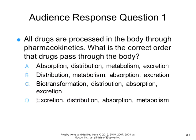All drugs are processed in the body through pharmacokinetics. The correct order that drugs pass through the body is absorption first, then distribution, then metabolism, then excretion of the drug.